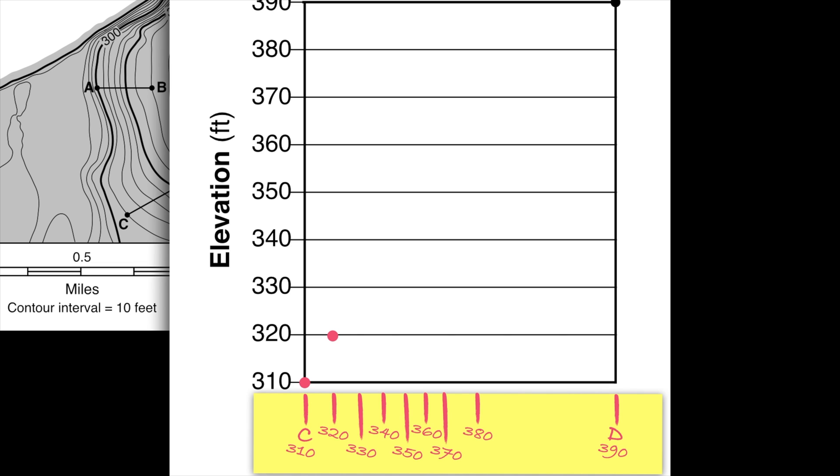Notice I'm going directly above where my markings are—370, 380, and then finally D was 390.